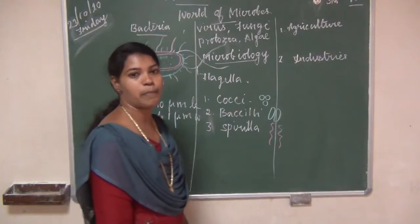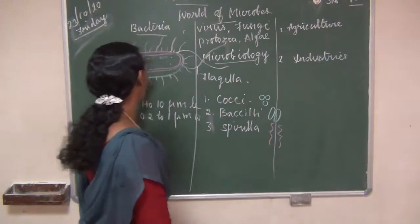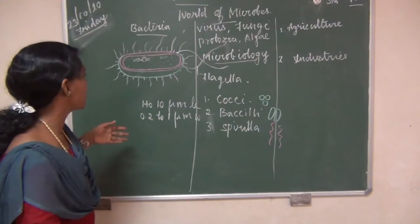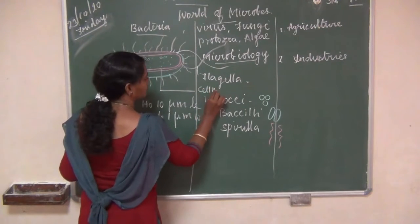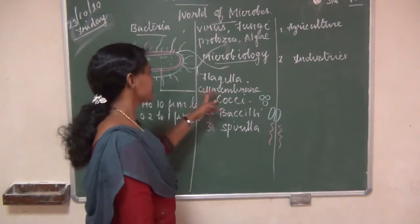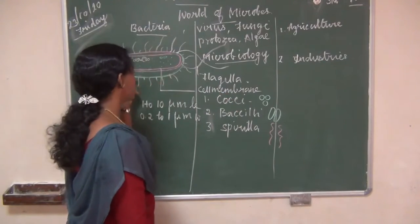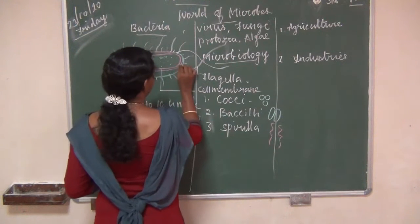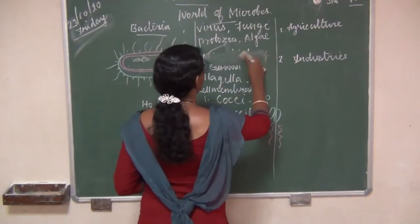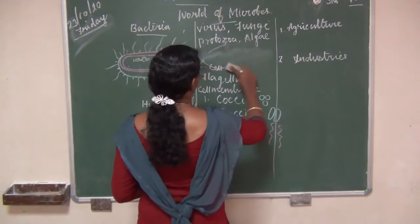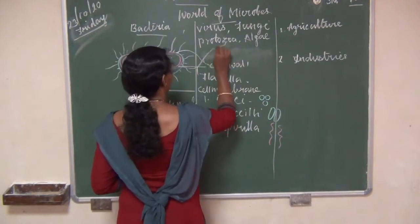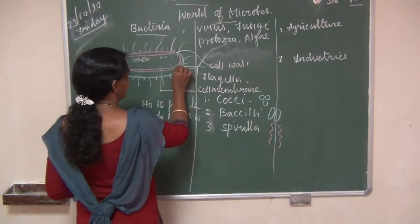Next, the structure of a bacterial cell. Look at the picture — this is bacteria. It has a cell membrane, also called plasma membrane. Bacteria is covered by a cell wall. The first layer is plasma membrane, and the second layer is cell wall.